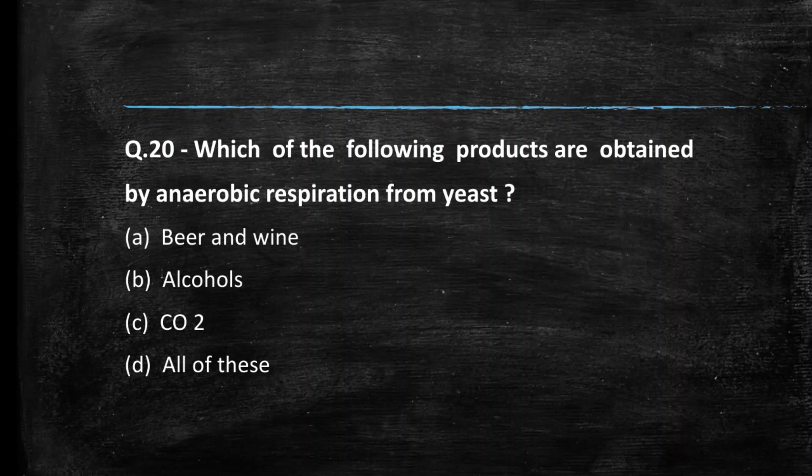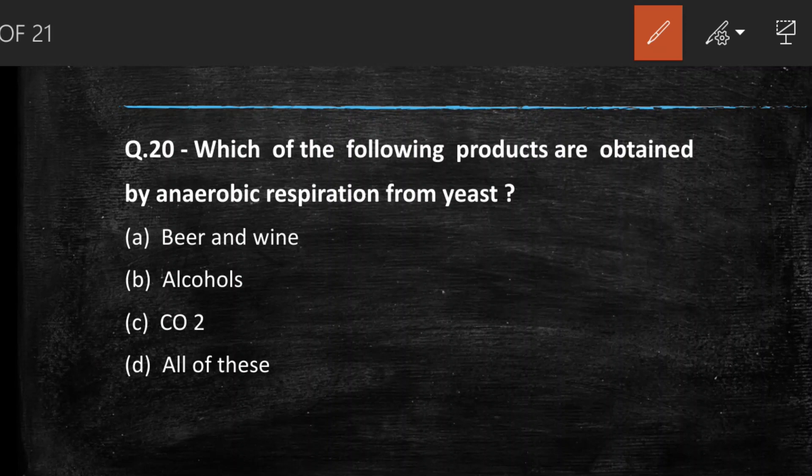Final question: which of the following products are obtained by anaerobic respiration from yeast? (A) Beer and wine, (B) Alcohol, (C) CO₂, (D) All of these. The right answer is option D, all of the above. If you liked our video, please share, like, and subscribe to our channel. Thank you very much.